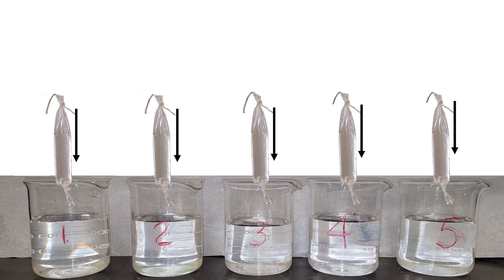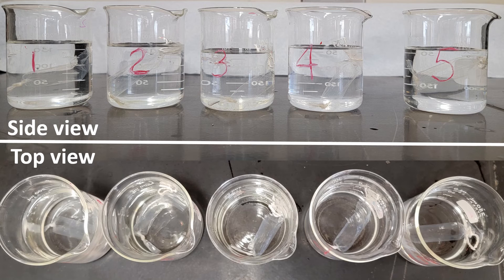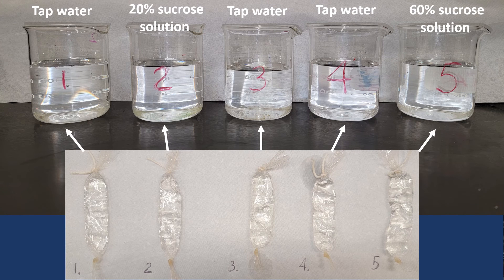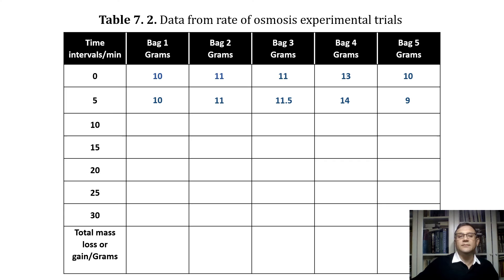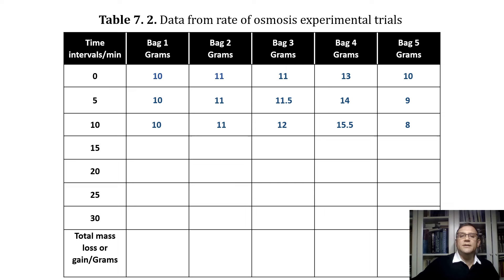Now, once again, submerge all the bags simultaneously into the beakers and leave them there for another five minutes. After the five minutes, simultaneously remove all the bags from the beakers. Place each bag next to its corresponding beaker and then one by one measure the mass using the laboratory balances. Record the results in our data table. Here it is for bags one, two, three, four, and five.